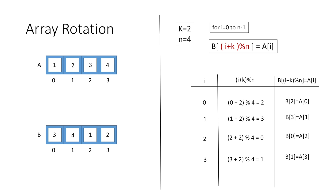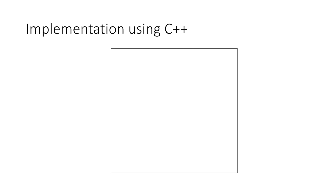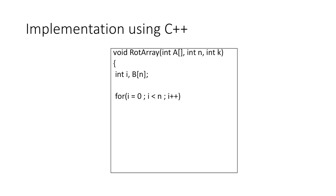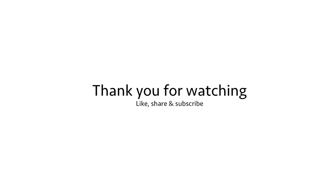Now let's implement this in C++. We start our rotate array function which takes an array a, size n, and integer k. We declare array b of size n and an integer i to traverse the array. Then we run a for loop over the array and set b[(i + k) % n] = a[i], which copies the rotated elements into array b. Finally, we display the rotated array by printing every element of b.